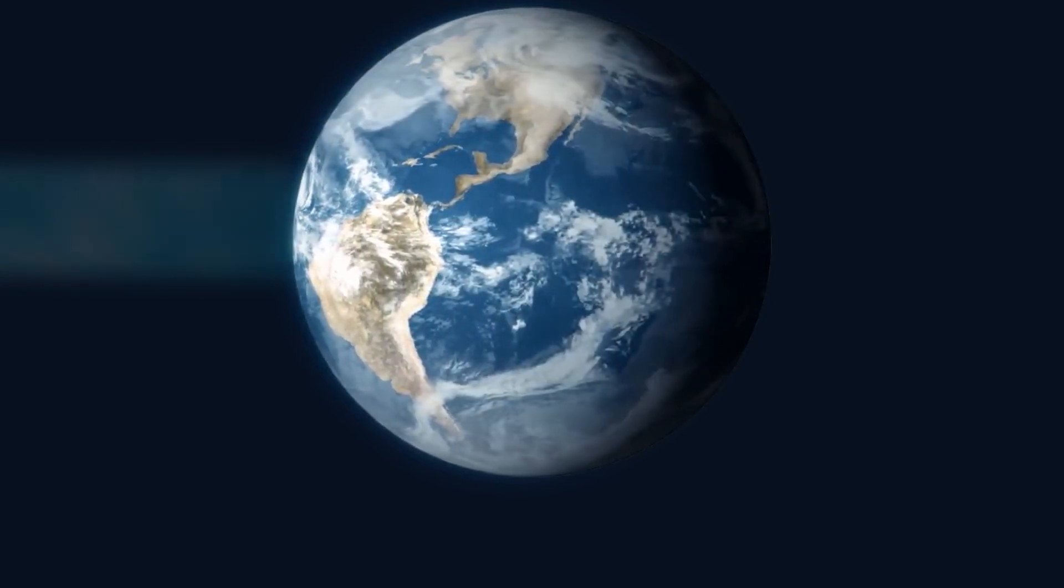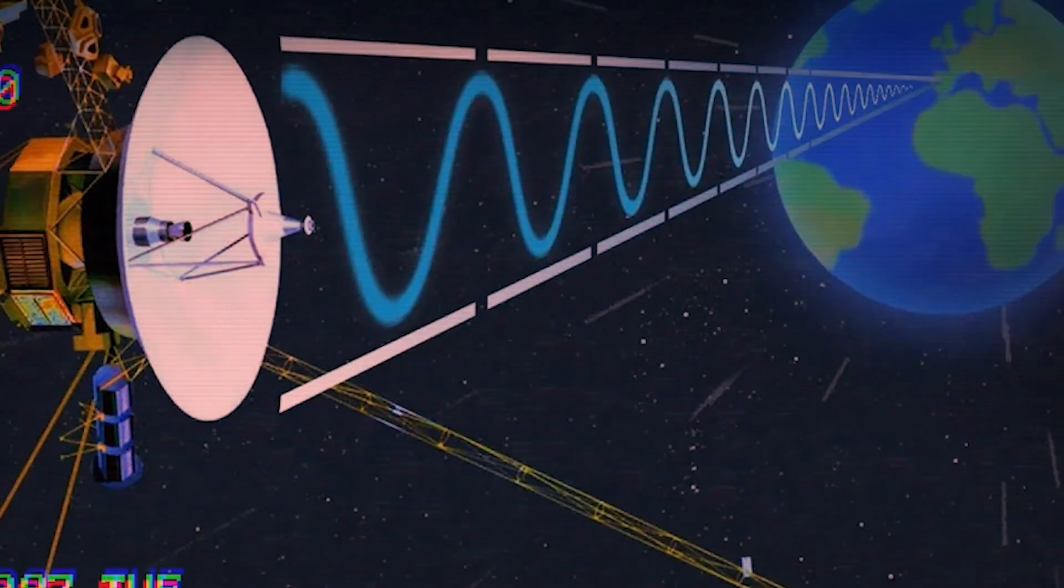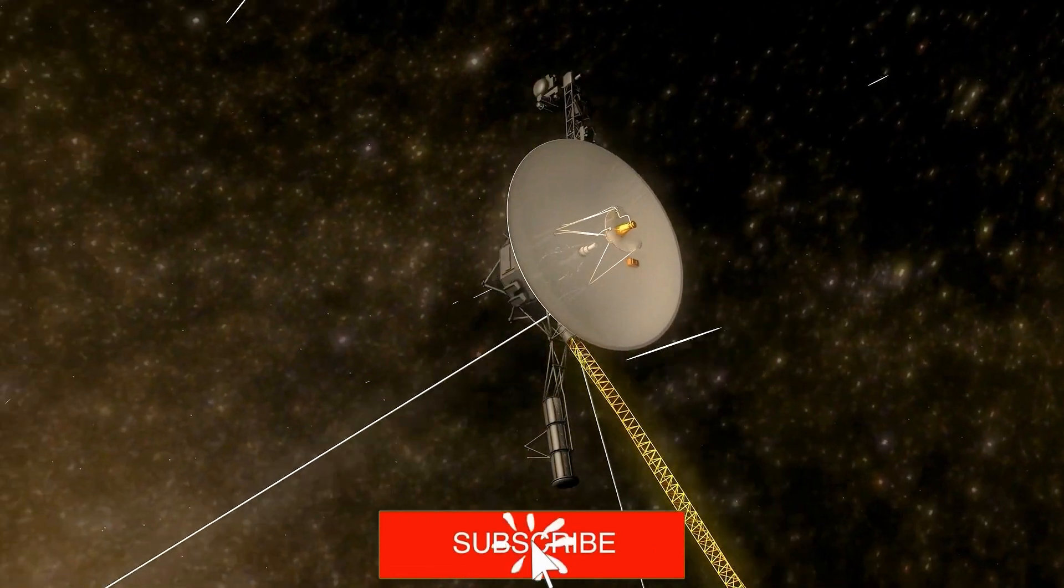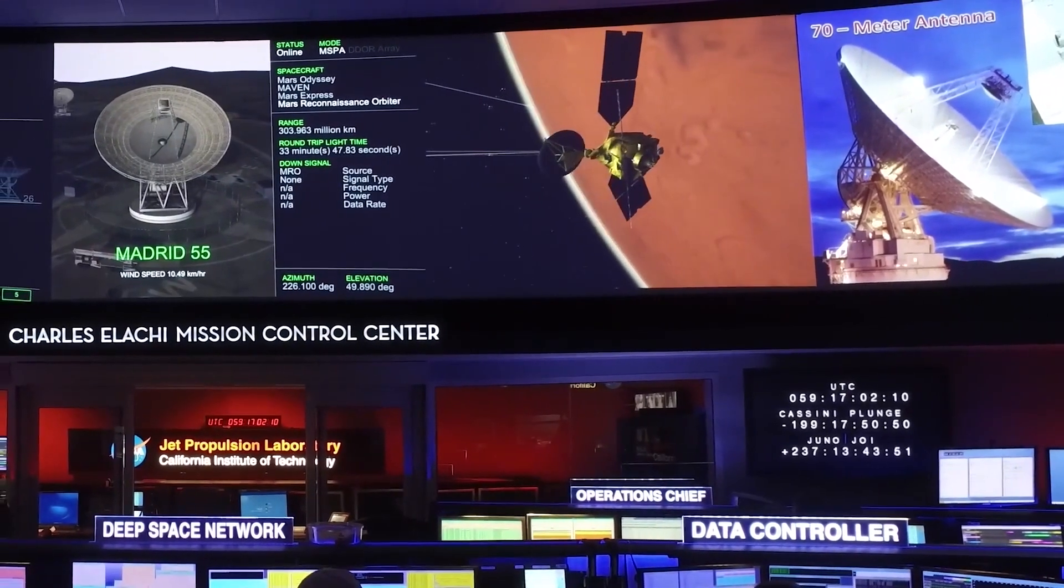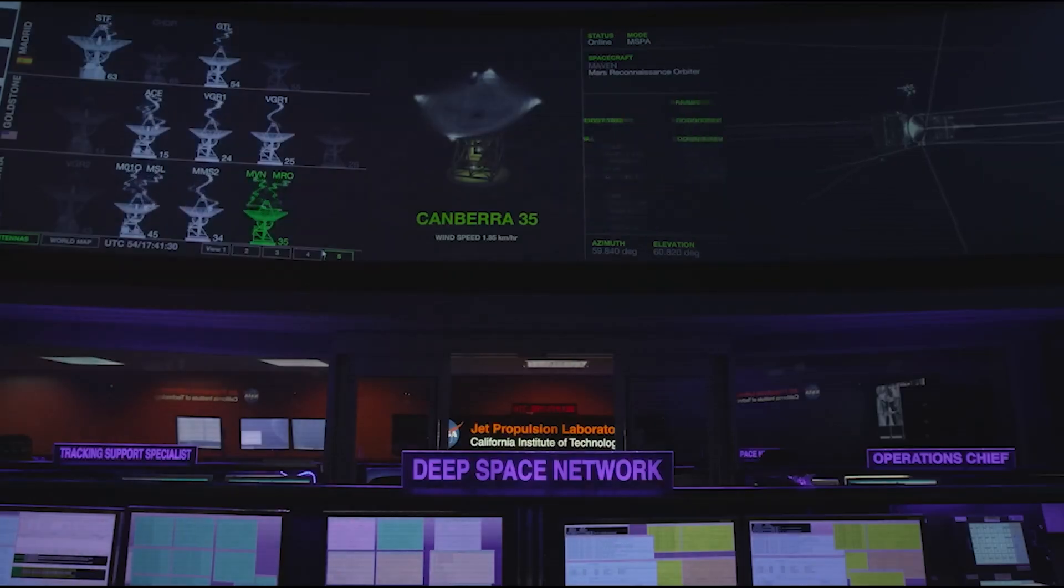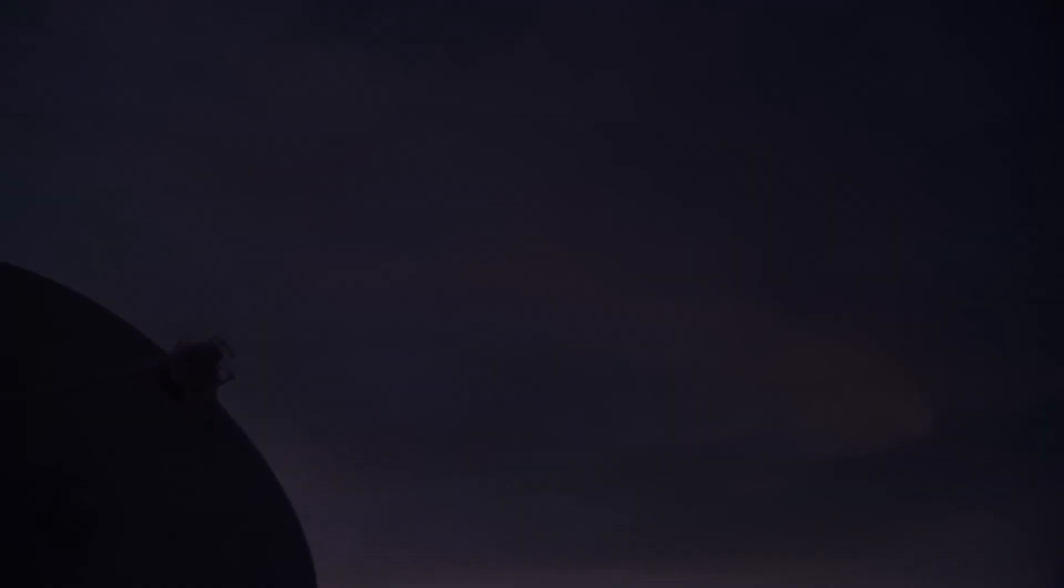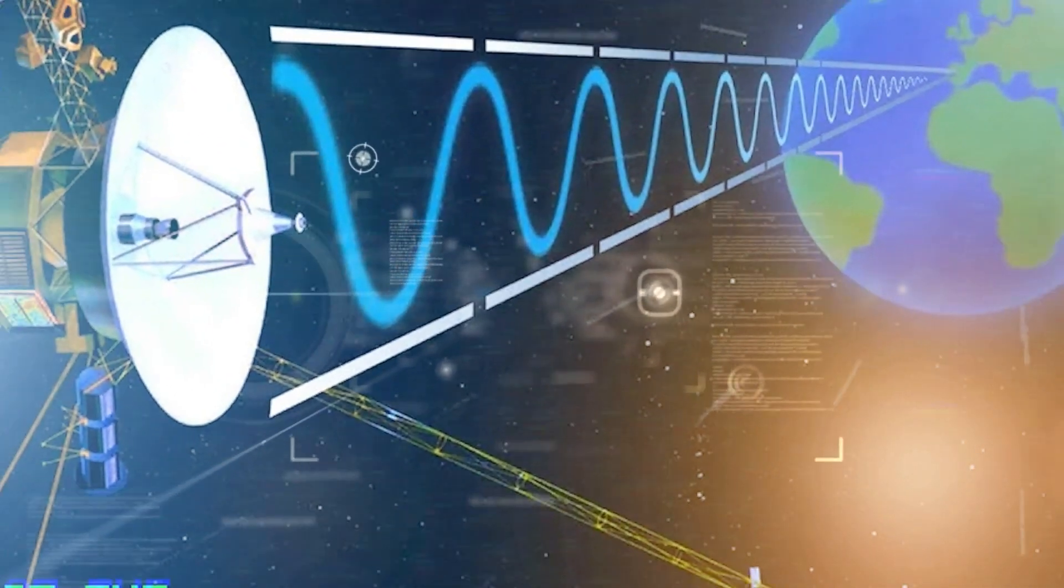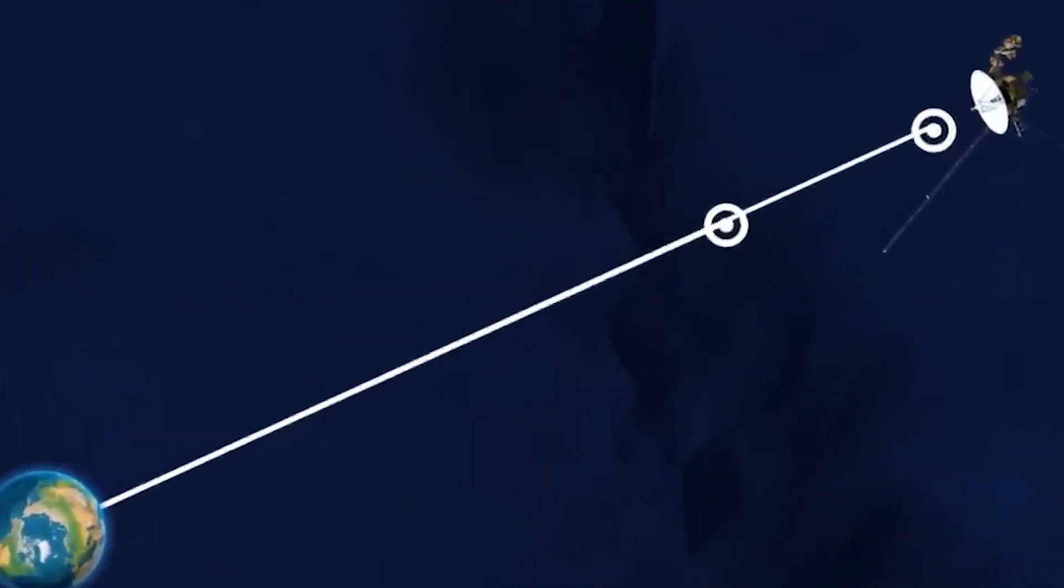Speed was paramount for Voyager 1. It charted a swifter path compared to its counterpart, Voyager 2, which had taken flight a fortnight earlier. By November 1977, Voyager 1 effortlessly navigated through the asteroid belt. The pivotal moment arrived in April 1978, when Voyager 1 initiated its up-close exploration of Jupiter from an impressive distance of 165 million miles. On March 5, 1979, it executed its closest pass, skimming a mere 217,000 miles above Jupiter's swirling clouds.